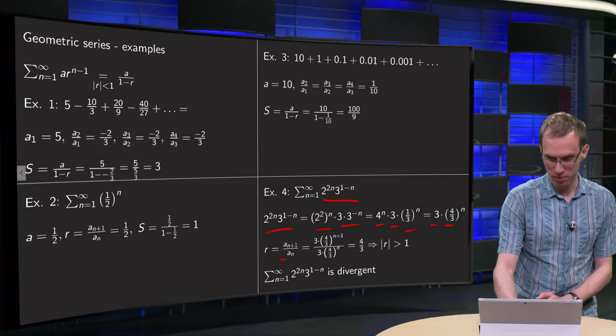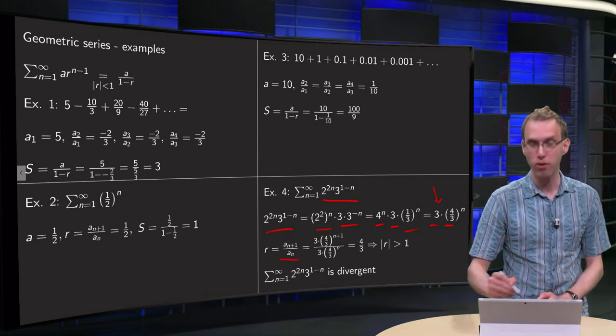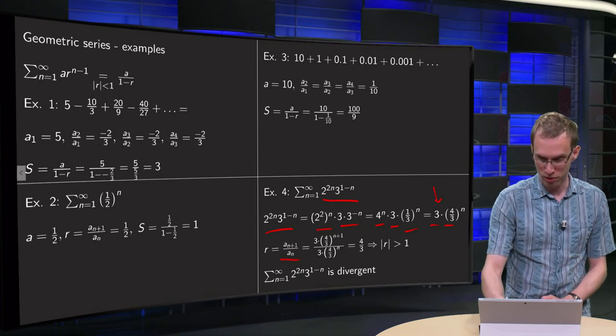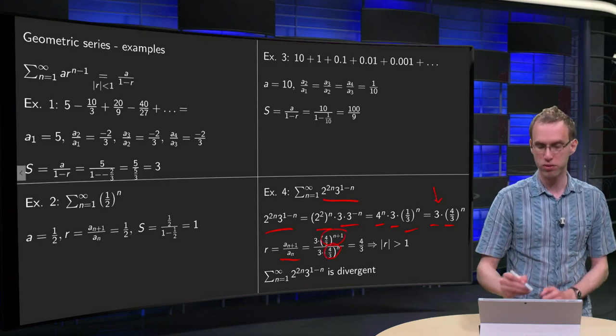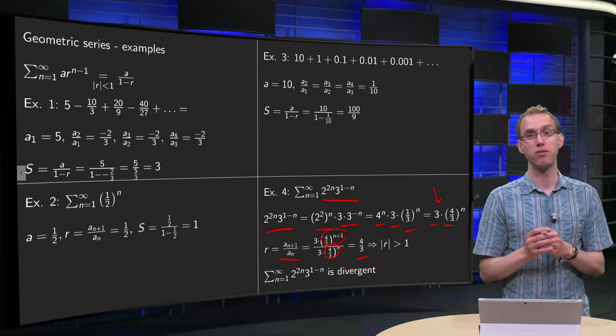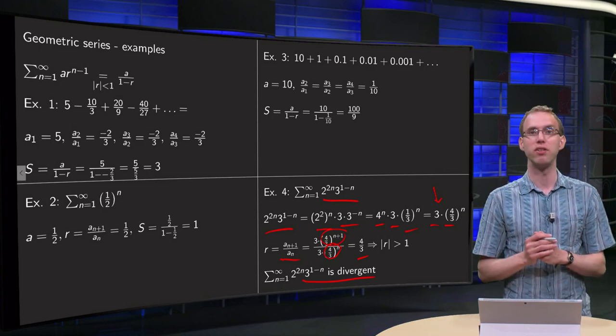Now you see your r equals a n plus 1 over a n. You see this overall factor 3 is not relevant, it drops out. And you get 4 thirds to the power n plus 1 divided by 4 thirds to the power n equals 4 over 3. So this ratio, the absolute value of the ratio is 4 over 3, which is bigger than 1. So this series is divergent.